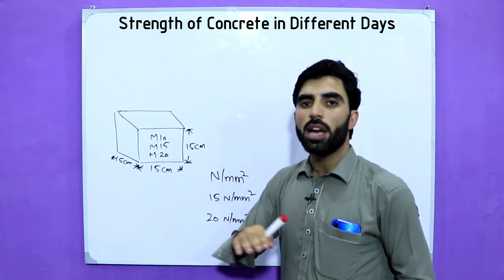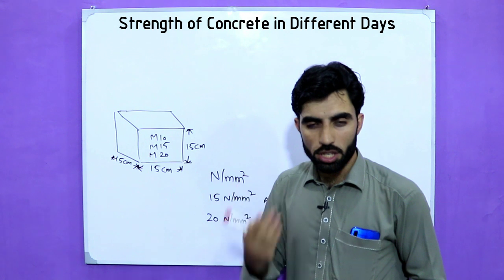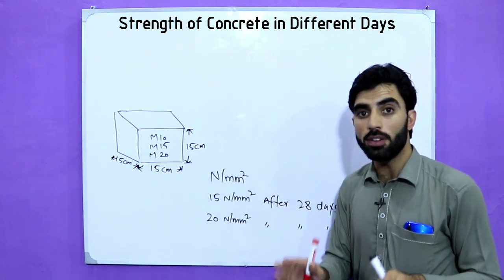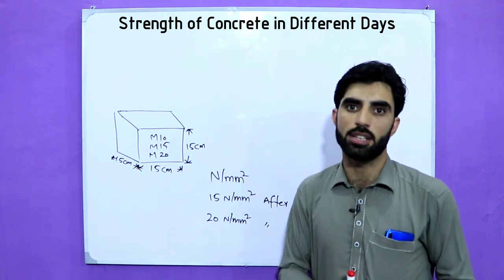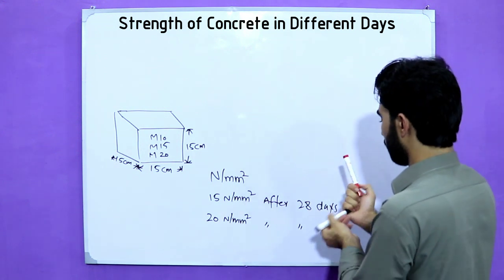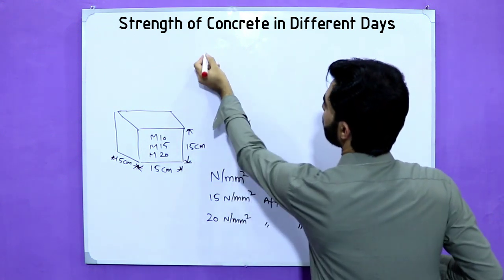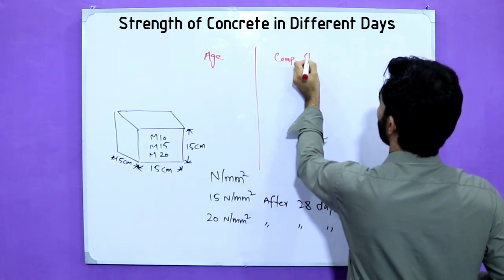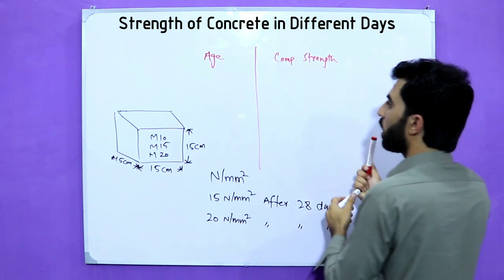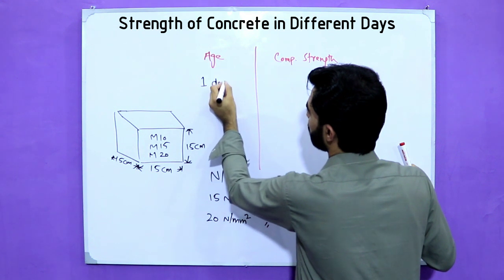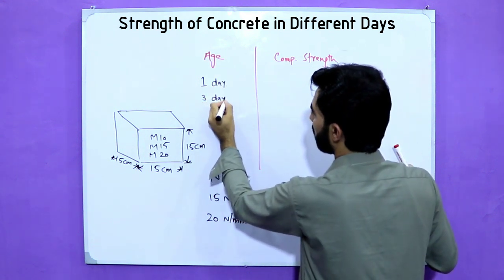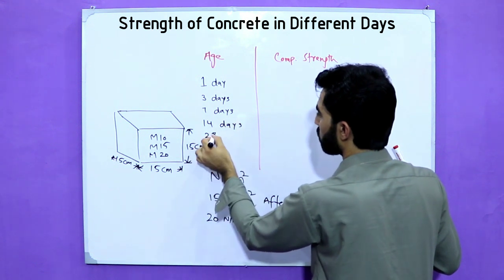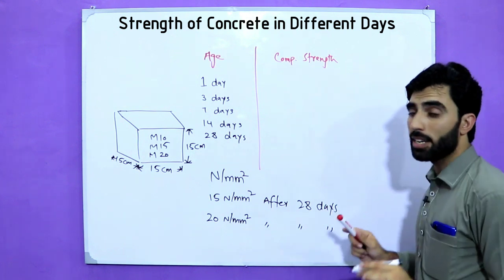We place the cube in the compression machine and test it at day 1, day 3, day 7, day 14, and day 28. Before going through the values, note that concrete gains strength rapidly in the initial days. The graph axes show age on one side and compressive strength on the other.